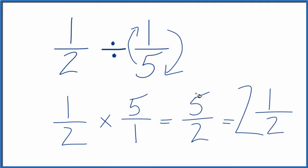So 2 and a half, that's the same thing as 5 halves. So we've divided 1 half by 1 fifth, we got 5 over 2 or 2 and a half.